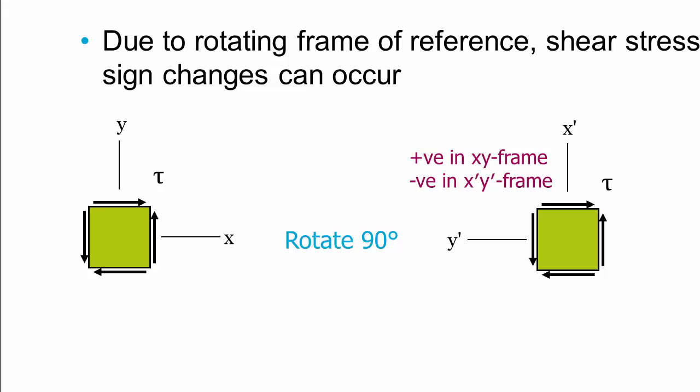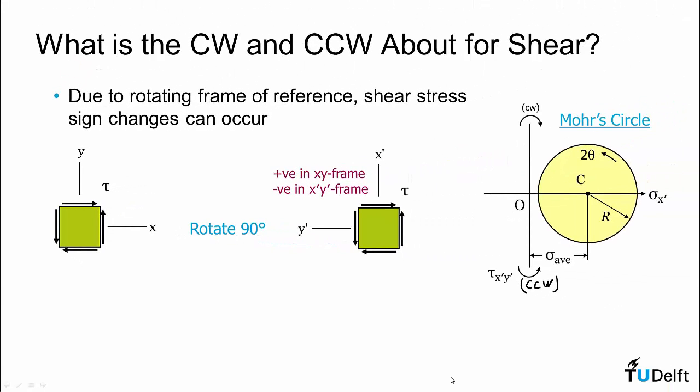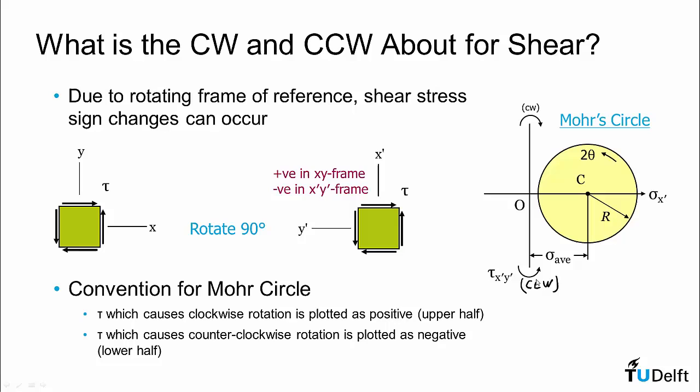So rotating the frame of reference by 90 degrees caused a change in the shear stress sign. Now I find this can create a little bit of confusion. Therefore, instead of plotting positive or negative, I look at clockwise and counterclockwise. And the convention for this is if I'm looking at a specific face, if that shear stress acting on that face would tend to create a clockwise rotation about the center of the element, then it's plotted in the upper half or the clockwise half of the Mohr circle. Whereas if the shear stress as shown here on the right would produce a counterclockwise rotation, it would be plotted in the lower half.